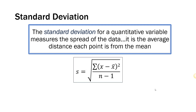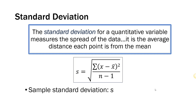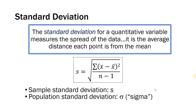This is what the formula looks like to calculate the standard deviation. As you can see, it's a little bit messy looking and it's not actually that fun to calculate by hand, so most of the time we're going to have software compute it for us. When we're talking about the standard deviation calculated from sample data, the notation is a lowercase s. When we're talking about the standard deviation of the population, we use the Greek letter sigma.